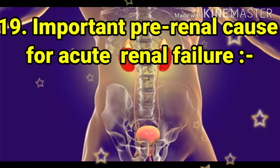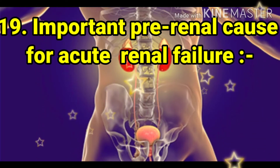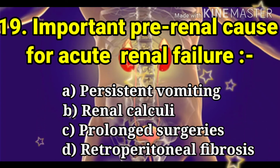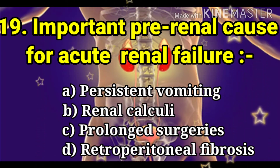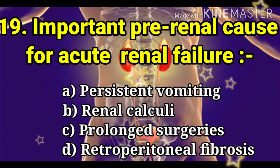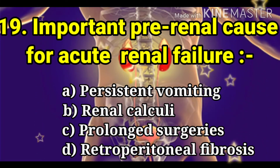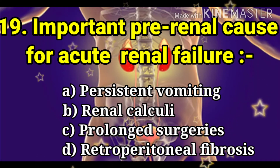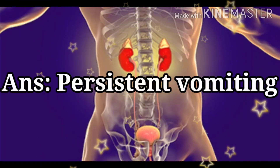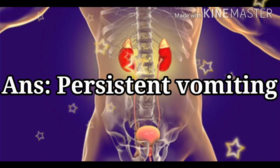Next question: the important prerenal cause for acute renal failure. The options are persistent vomiting, renal calculi, prolonged surgeries, and retroperitoneal fibrosis. The answer is persistent vomiting.